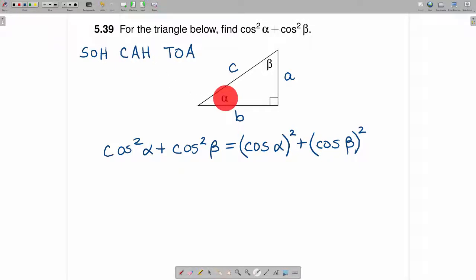From the perspective of angle alpha, the adjacent side is B, and the hypotenuse is C. So this becomes B over C squared.